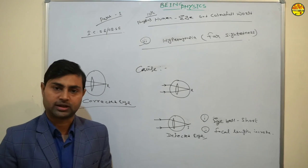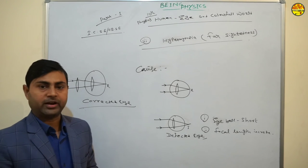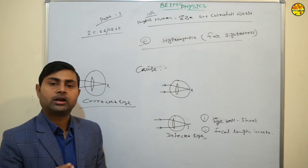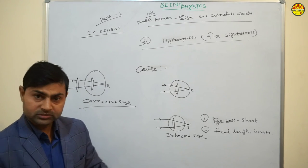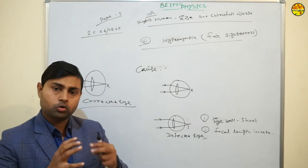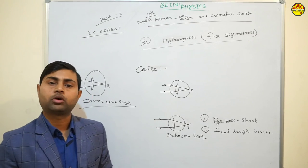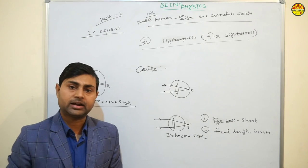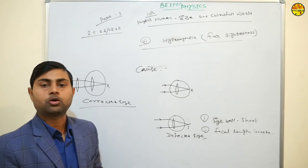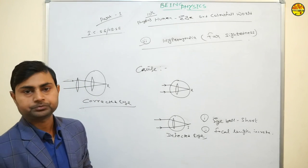After myopia and hypermetropia, there is also Presbyopia. Presbyopia is a defect of the human eye in which you can't see nearby objects or distant objects clearly — neither nearby nor distant objects are seen accurately. Presbyopia is corrected using bifocal lenses.